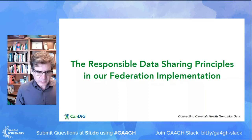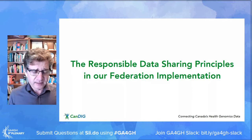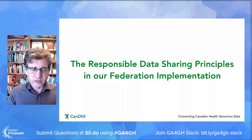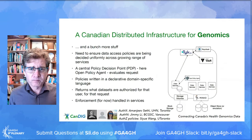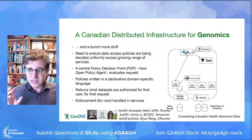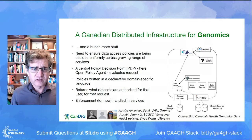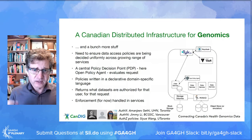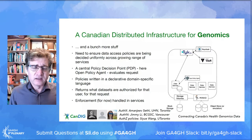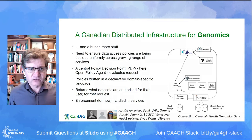That was our federation design. The question becomes how these principles inform our implementation — something we've been thinking about quite a bit lately, as we're just about to put into production a new version of our platform. We started off really all about genomics, but health data research marches onwards. There are increasingly rich data types that don't make sense to serve with the same data services, so we've needed to ensure data access policies are decided uniformly across a growing range of services, implementing that with a central policy decision point that evaluates each request against a declarative domain-specific language.